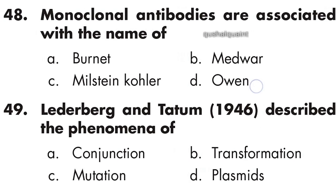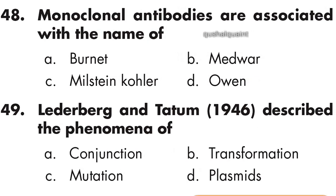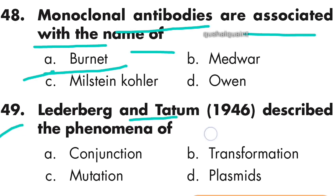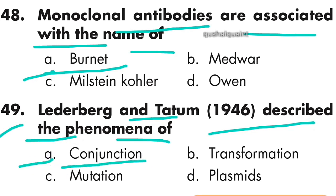Question number 48: Monoclonal antibodies are associated with the name of Kohler and Milstein. Option A is right. Question number 49: Lederberg and Tatum in 1946 described the phenomenon of conjugation. Option A is right — conjugation.